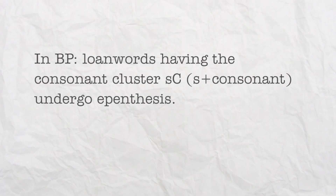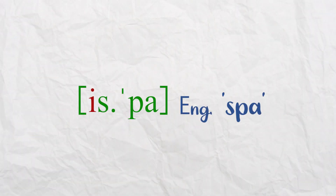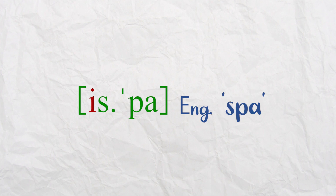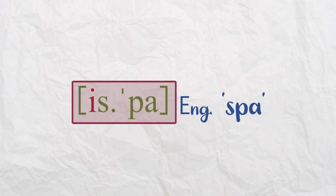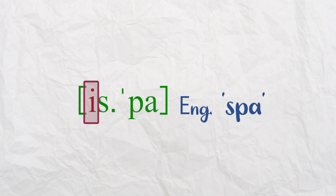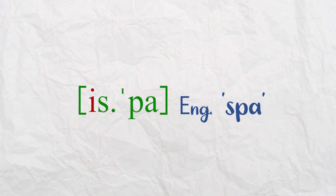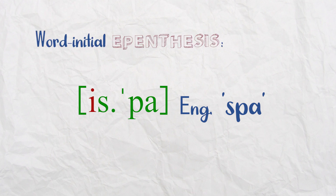We're talking about loanwords having a consonant cluster SC — S here is just the sound /s/ followed by a consonant. For example, the word 'spa.' It has S and then a consonant. When it's borrowed into Brazilian Portuguese it's pronounced 'ispa.' The E has been epenthesized — it doesn't exist in English. In Portuguese, you insert this E at the beginning, word-initially. So you can call this word-initial epenthesis: 'spa' becomes 'ispa.' Other words with a similar phonological context will undergo the same thing.